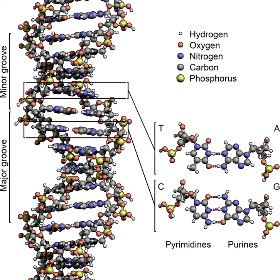DNA is a long polymer made from repeating units called nucleotides. The DNA chain is 22 to 24 angstroms wide, and one nucleotide is 3.3 angstroms long. Although these repeating units are very small, DNA polymers can be enormous molecules containing millions of nucleotides. For instance, the largest human chromosome is 220 million base pairs long.